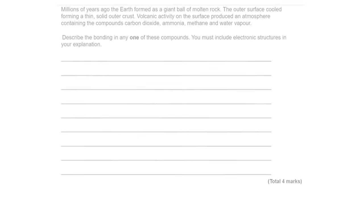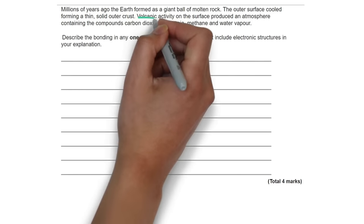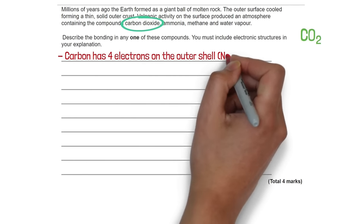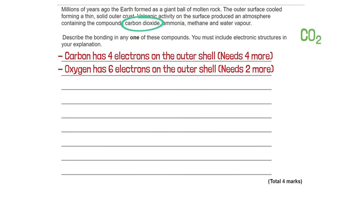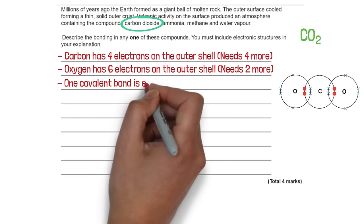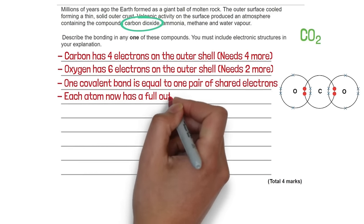A question about Earth millions of years ago asks us to describe the bonding in compounds including the electronic structures. Choosing carbon dioxide (CO₂): carbon is in group 4, so it has 4 electrons on the outer shell and needs 4 more. Oxygen is in group 6, so it has 6 outer electrons and needs 2 more. Diagrams can also be used. When a pair of electrons are shared, this equals one covalent bond, and after bonding each atom has a full outer shell.